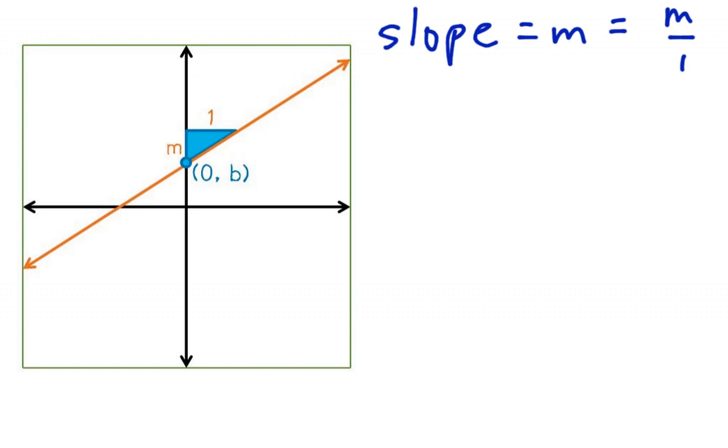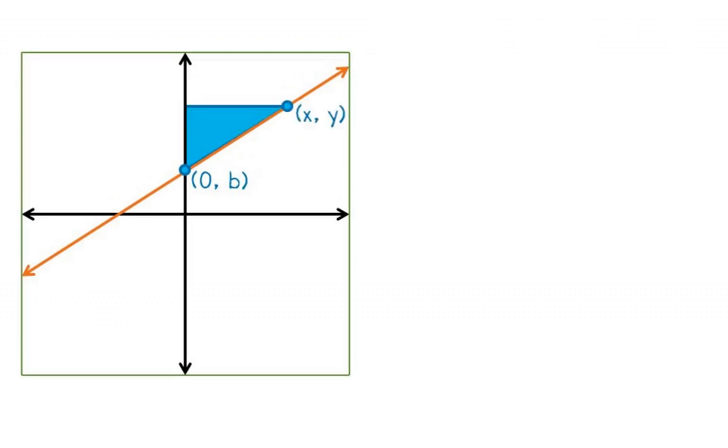But in this specific example, or this general example, we don't know what the slope is, and so we'll just call it m. This similar triangle has its own rise and its own run. Again, the run is easy to figure out because it is just the value of x because that's how far over we go from the y-axis to the x-coordinate.